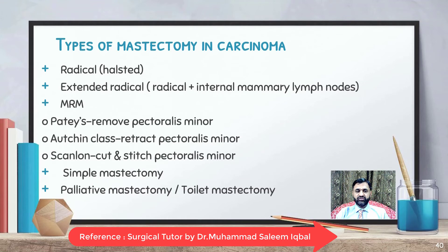Types of mastectomy include radical (Halsted) and extended radical mastectomy, which are now obsolete. The most commonly performed procedure is modified radical mastectomy (MRM), which has three types: Patey's mastectomy, which removes pectoralis minor; Auchincloss mastectomy, which retracts pectoralis minor without removing it; and Scanlon mastectomy, which cuts and stitches pectoralis minor. Simple mastectomy and palliative (toilet) mastectomy are also performed; palliative mastectomy is done for locally advanced tumors to remove as much tissue as possible and prevent further fungation.